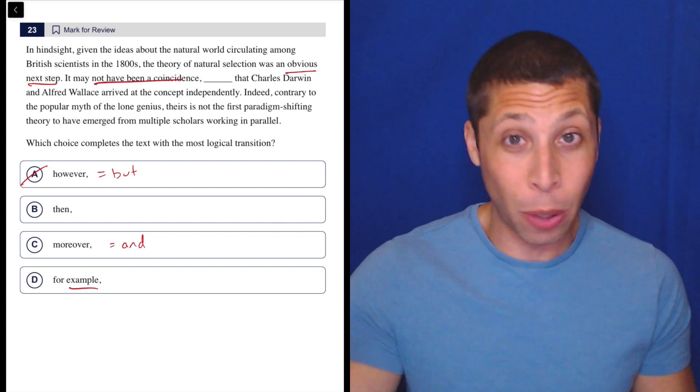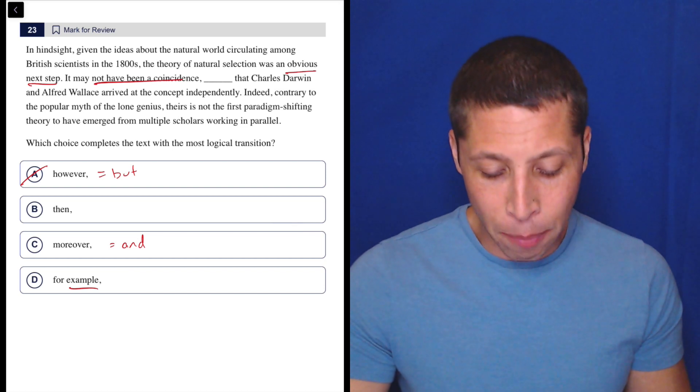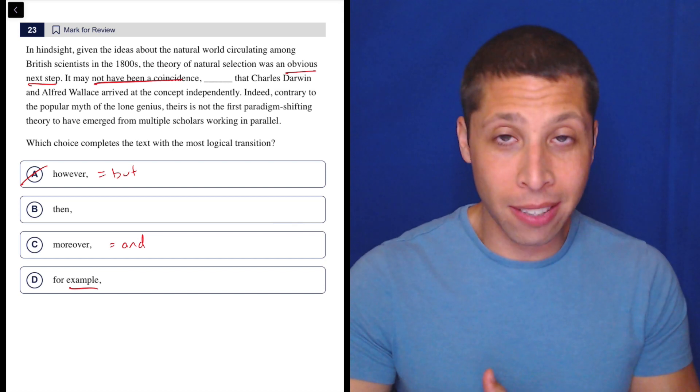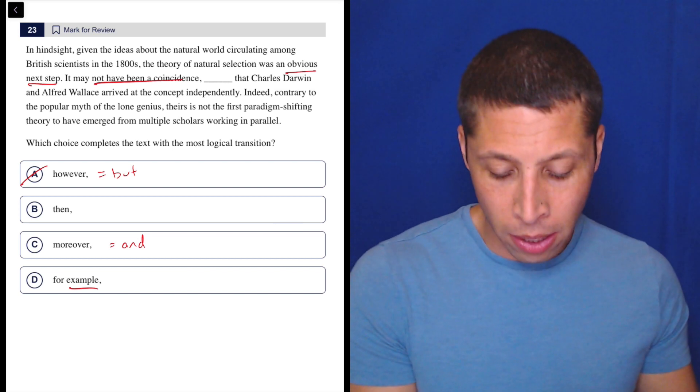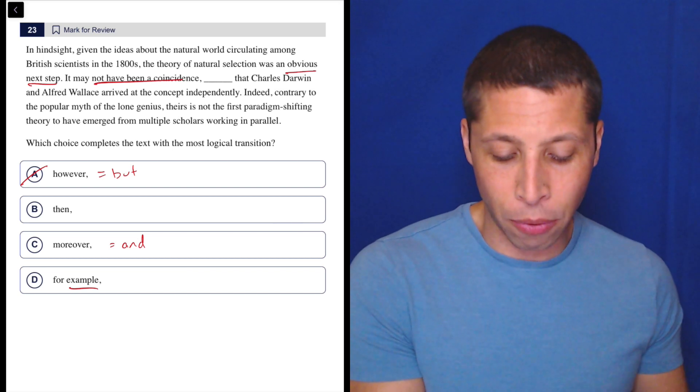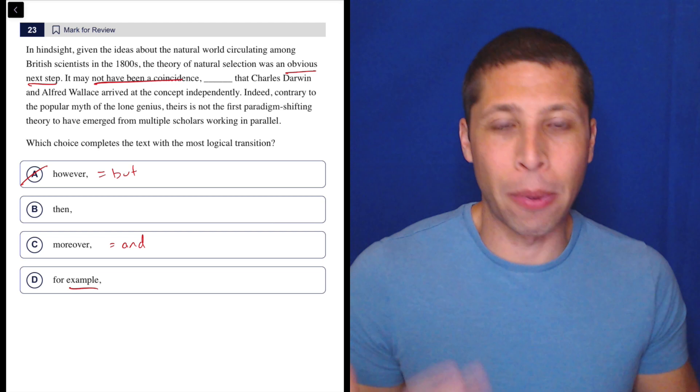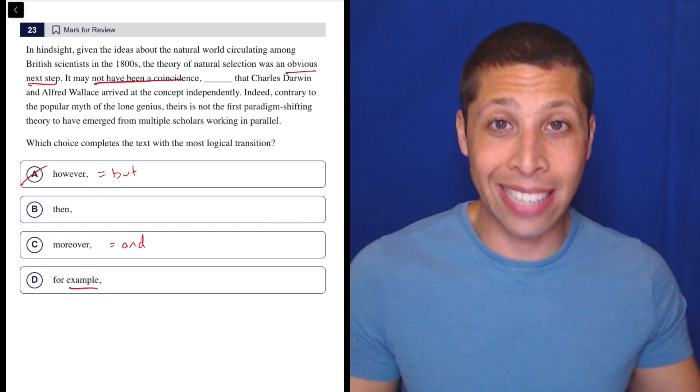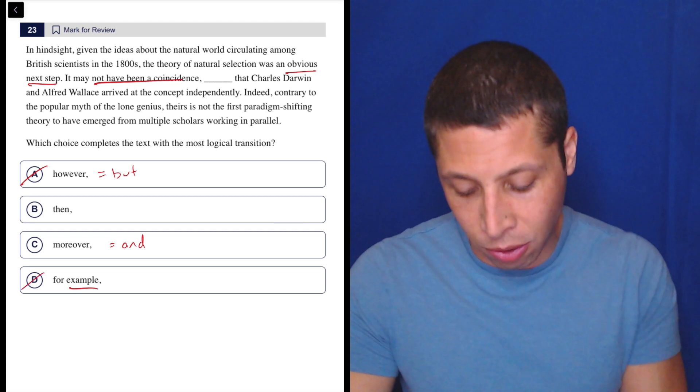I'm skipping then because we don't know what it means, supposedly. And is this an example? Well, it's an obvious next step. For example, it may not be a coincidence that they both figured it out. It's not an example. Them figuring it out is not an example of it being an obvious step. So that doesn't work.